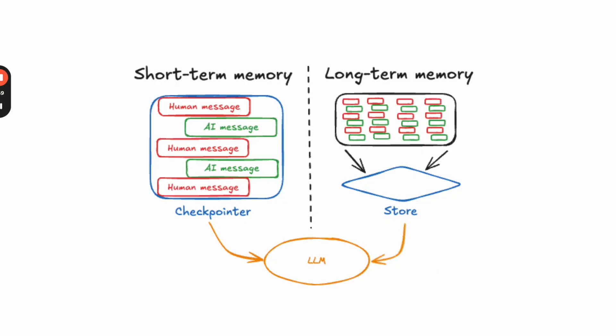At a high level, we think there are two types of memory. One is short-term memory, and this primarily relates to conversation memory. If you've used LangGraph before, then you're probably familiar with the idea of a checkpointer. Checkpointers maintain memory for a specific thread — a thread is equivalent to a conversation — and so this is what we call short-term memory, and checkpointers are the LangGraph implementation for that.